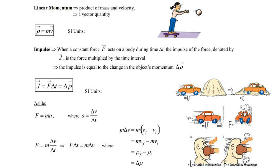Newton defined the quantity of motion of an object called momentum as the product of the mass m and the velocity v.